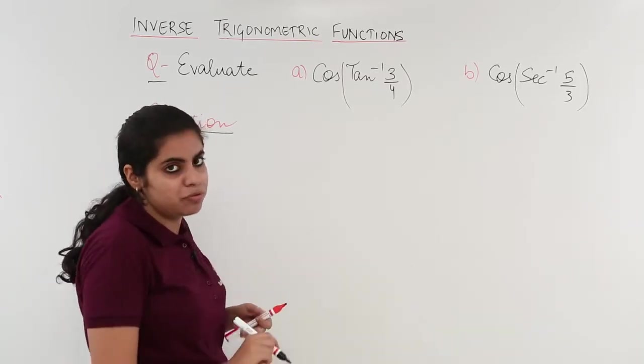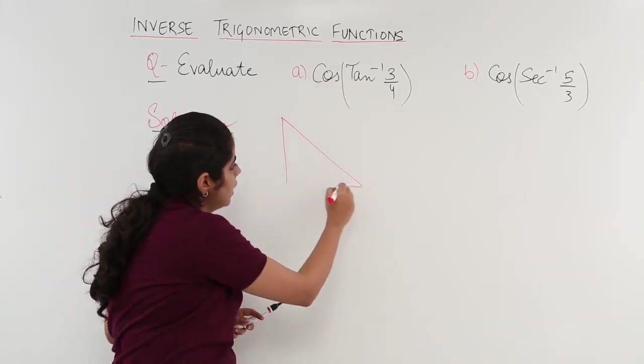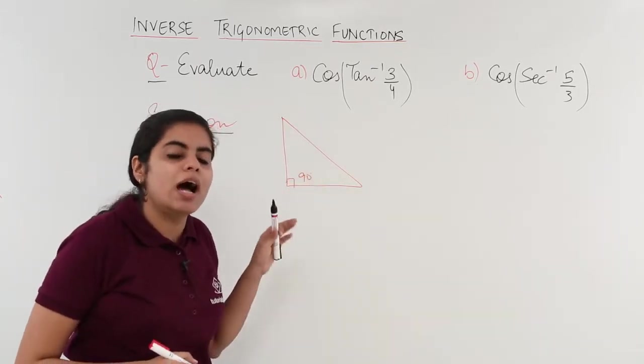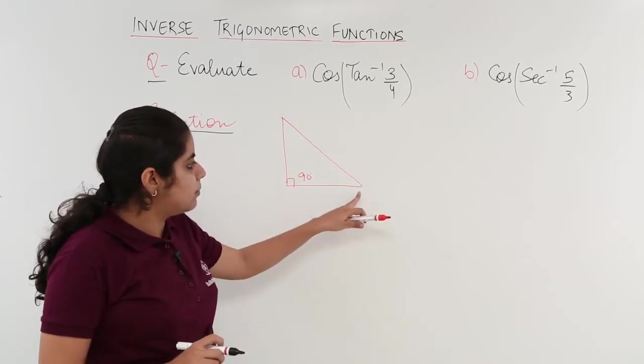Tan⁻¹(3/4), draw a triangle because these two things are different. We do not get any idea just by simply looking at the question. I have a right angle triangle, I have 90 degrees.